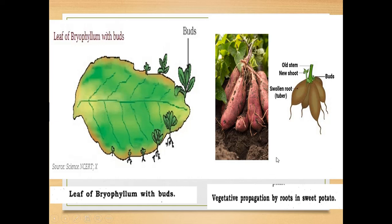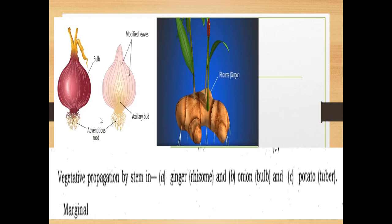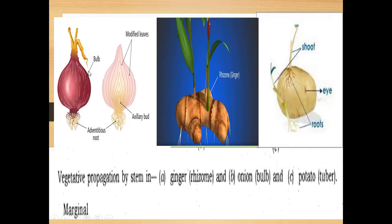Here you can see vegetative propagation by roots in sweet potato — from the root, the plant will be grown. From the stem part in ginger, onion and potato, the new plant gets developed. In ginger, the stem part is called a rhizome, and through this rhizome the new plant can be developed.